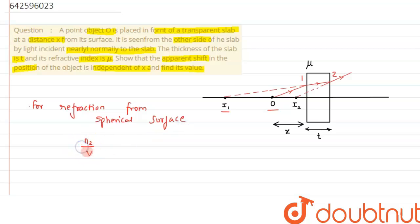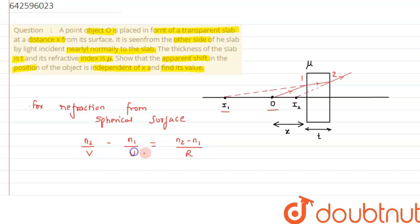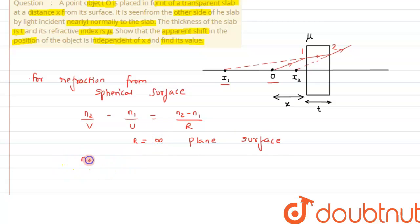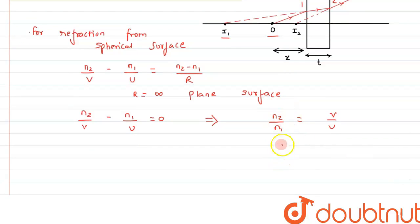The formula for refraction from a spherical surface is: n2/v − n1/u = (n2 − n1)/R, where n2 is the refractive index of the medium the light enters after refraction, n1 is the medium from which the light is coming, v is the image distance, u is the object distance, and R is the radius of curvature. Since the surface here is plane, R approaches infinity, so the formula reduces to n2/v − n1/u = 0, giving us n2/n1 = v/u.